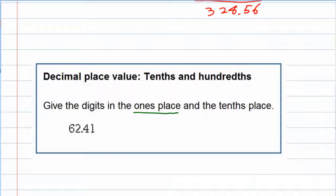The ones place is how many ones would be in that number. So our number here of 62.41 has a two in the ones place. That's how many one dollar bills I would get.